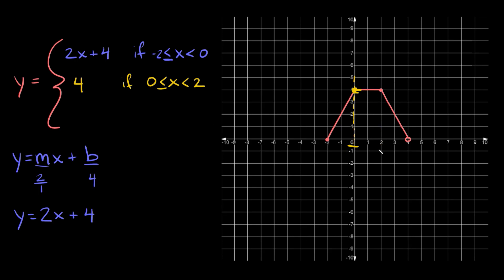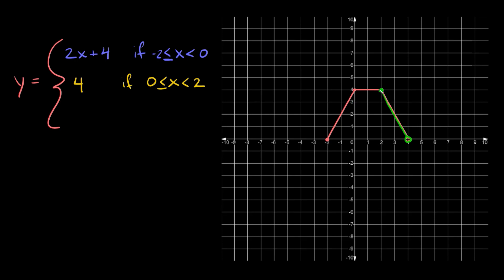That's the second part. And then lastly we have this line right here. We have a closed circle right there and an open circle right here. To find the equation of this line, again we just want to use slope-intercept form: y equals mx plus b.